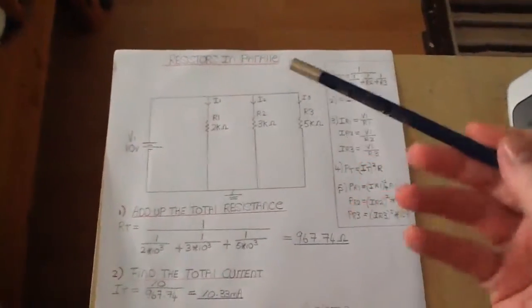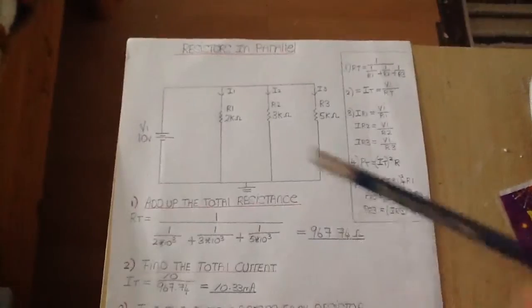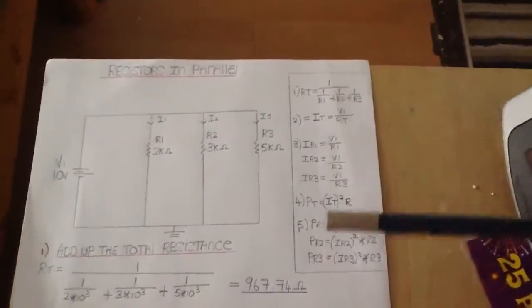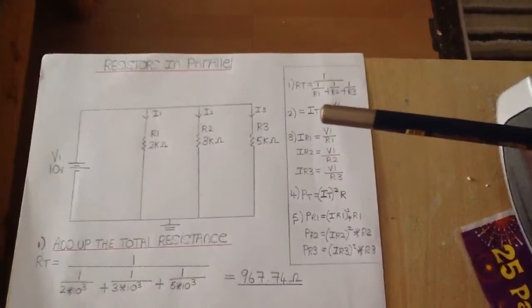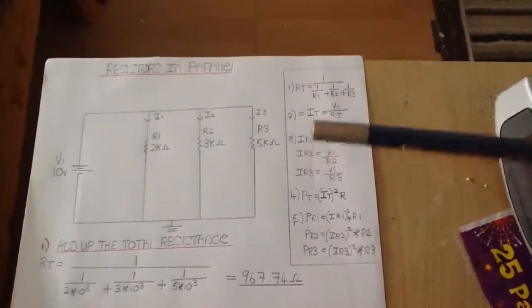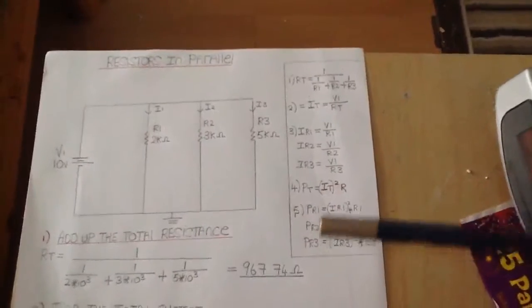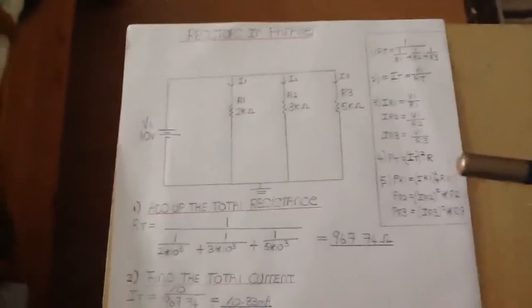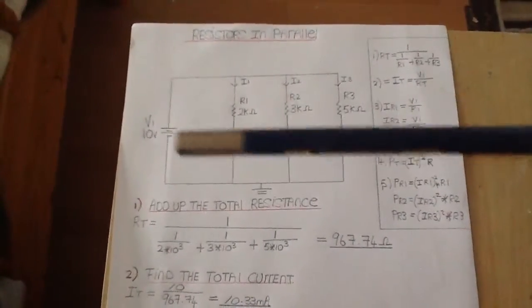So this is the resistors in parallel circuit that I've done here. These are the equations that I've used to find the total resistance, the total current, the current across each of the three resistors, the total power, and the power across each of the three resistors.